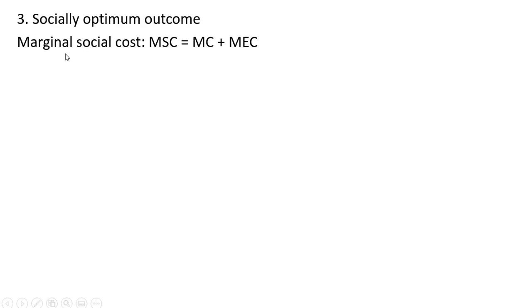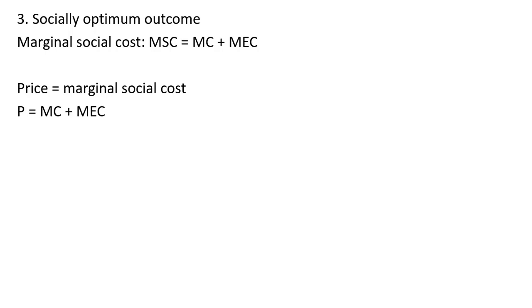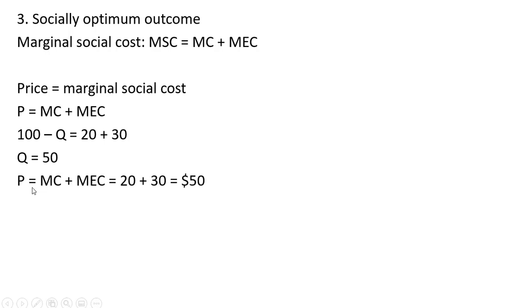For the socially optimal outcome, note that marginal social cost equals marginal private cost plus marginal external cost. The condition that must hold is price equals marginal social cost, where marginal social cost is marginal cost plus marginal external cost. Plugging in the values, the optimal level of output is 50 units and the price should also be $50.